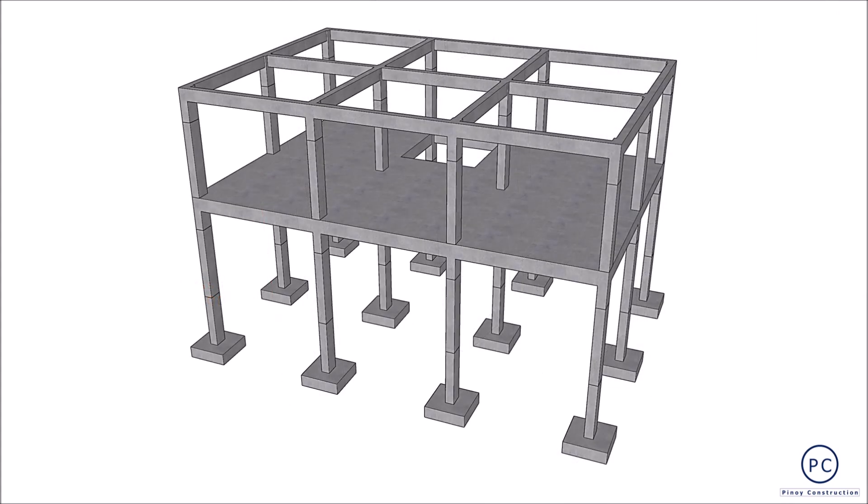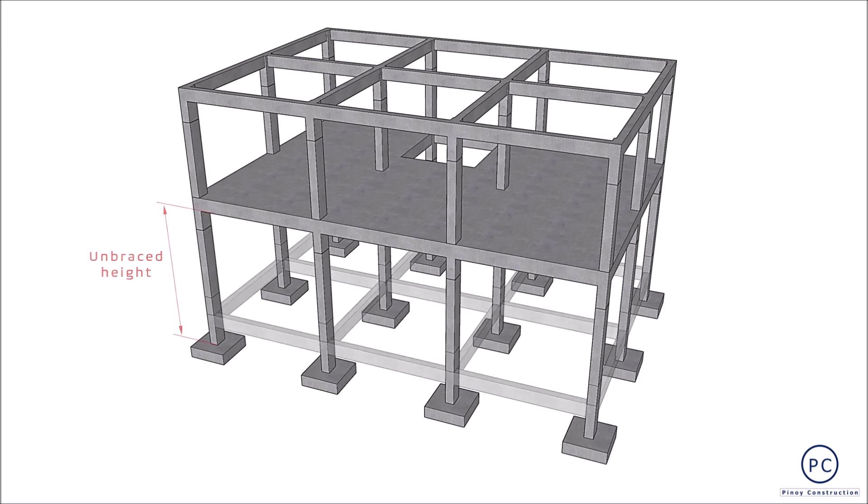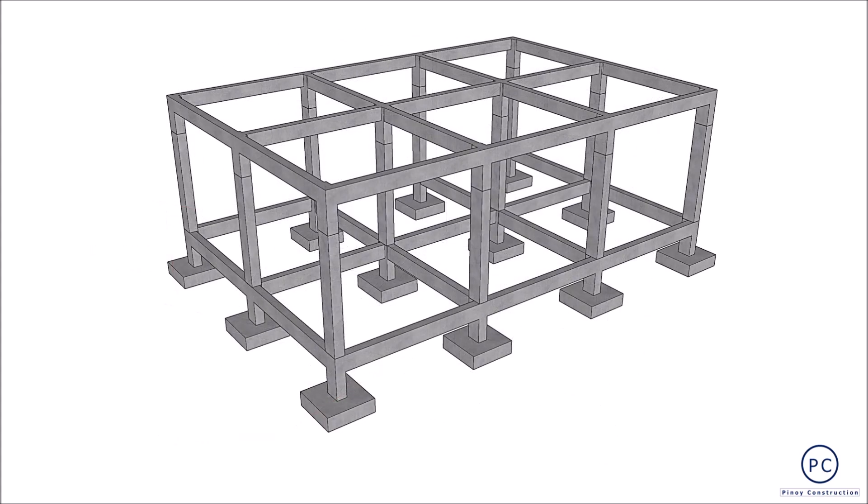Karaniwan itong nangyayari sa bahagi ng column na mula sa footing hanggang sa susunod na floor or roof beam. Kung sakaling hihigit sa 4 meters, isang option na ginagawa ay maglagay ng additional lateral bracing sa pamamagitan ng thigh beam to reduce the unbraced height. Samantala, ang nasabing configuration ay may corresponding recommended cross-sectional dimensions.